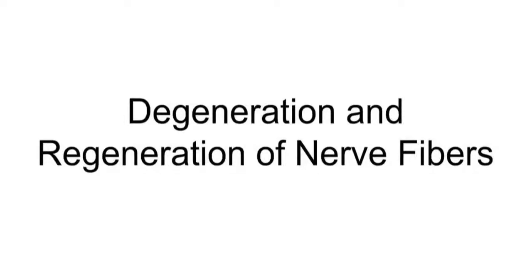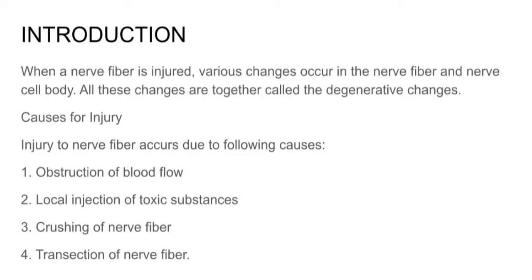Degeneration and regeneration of nerve fibers: introduction. When a nerve fiber is injured, various changes occur in the nerve fiber and nerve cell body. All these changes are together called degenerative changes. Causes of injury include obstruction to blood flow, local injection of toxic substances, tracing of nerve fiber, and transaction of nerve fiber.